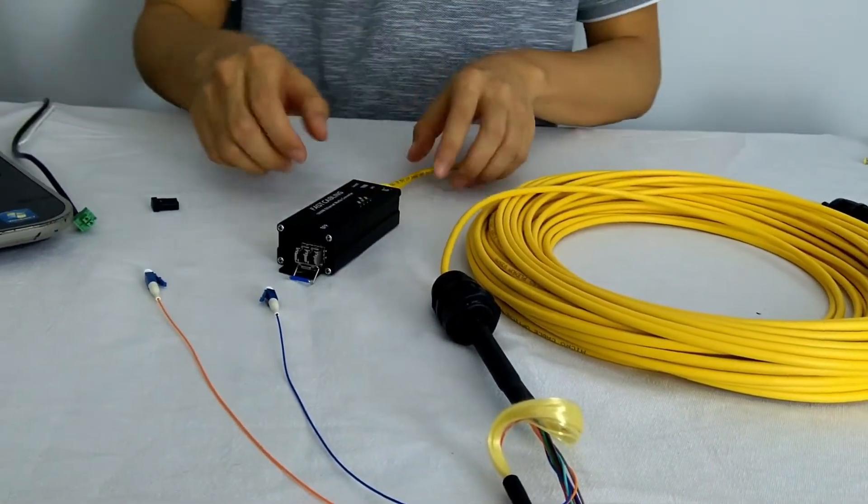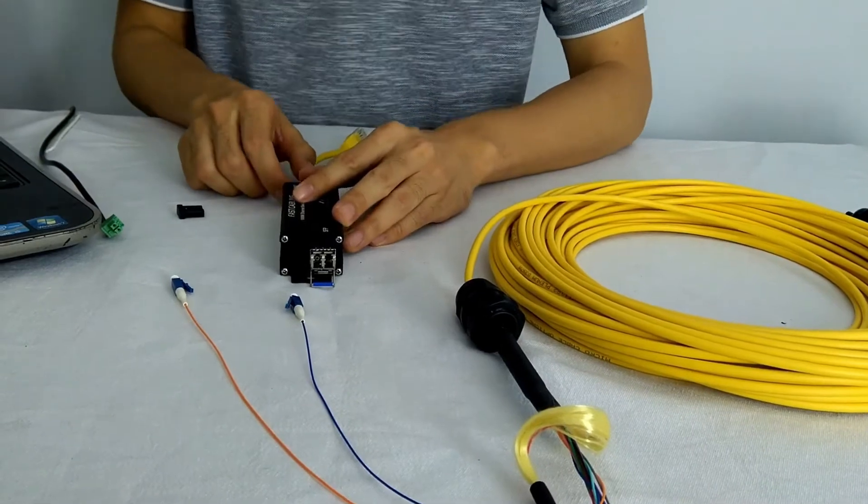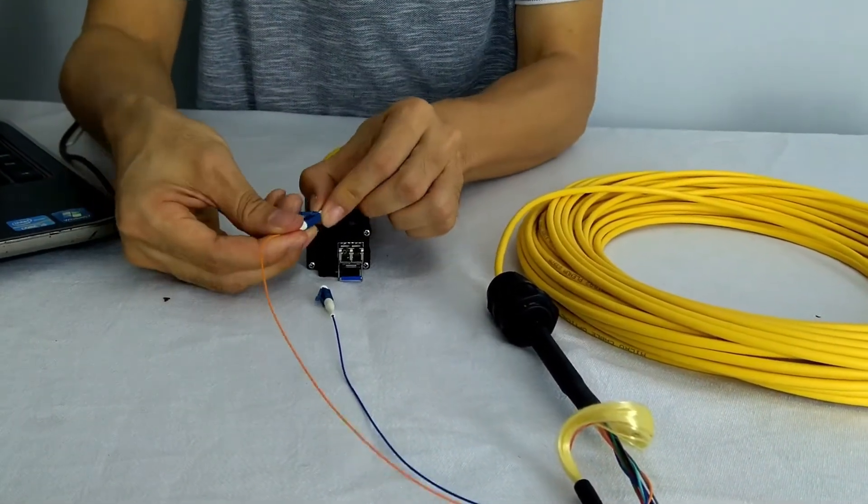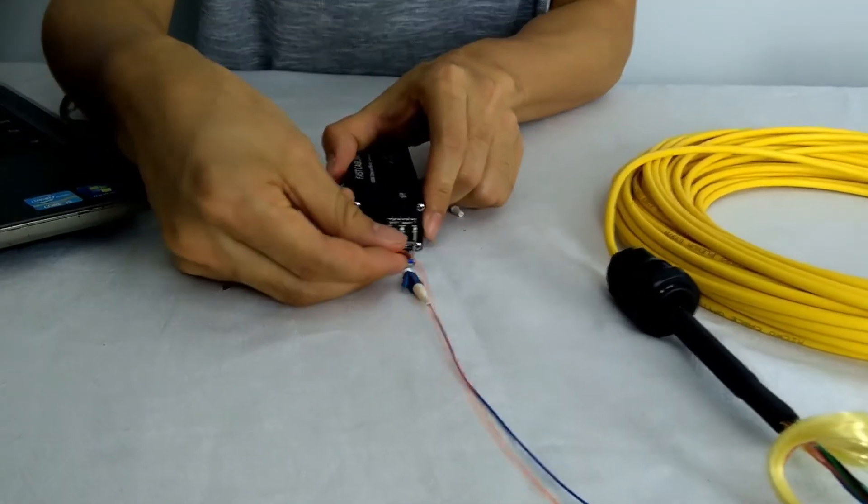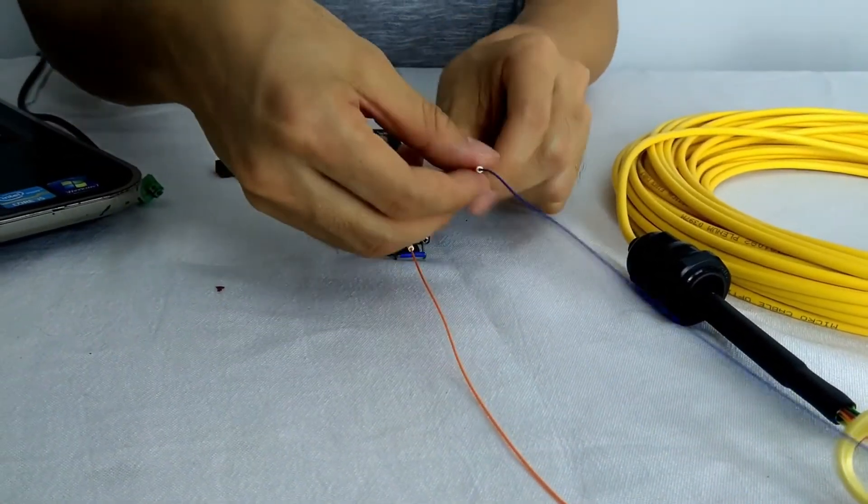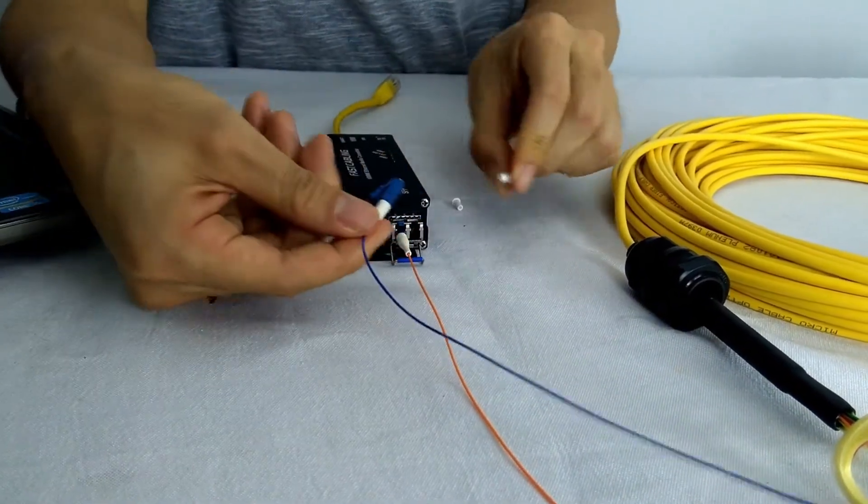Alright, now let's make the connection. There are two fibers. Here, we are using the light orange color to the right for the transmitting, and the blue for the left for the receiving.